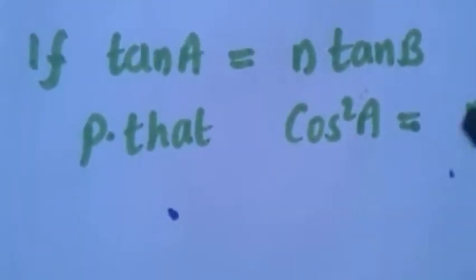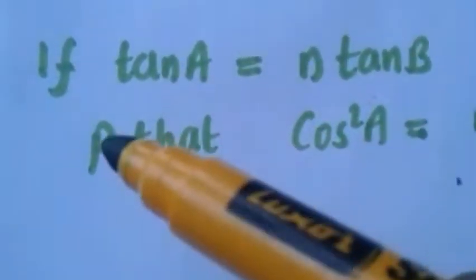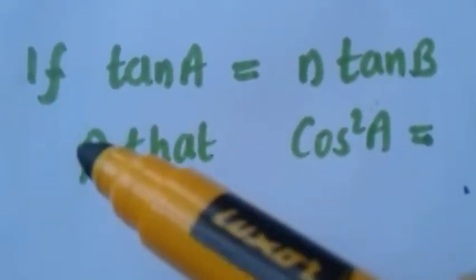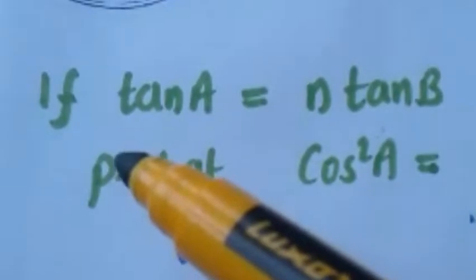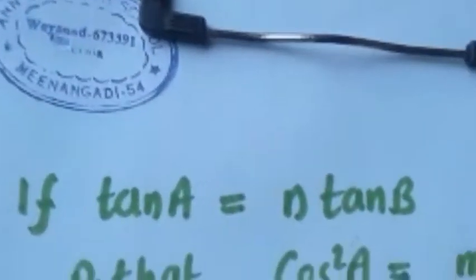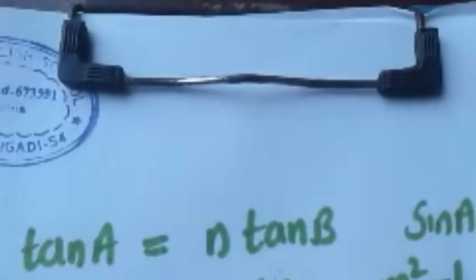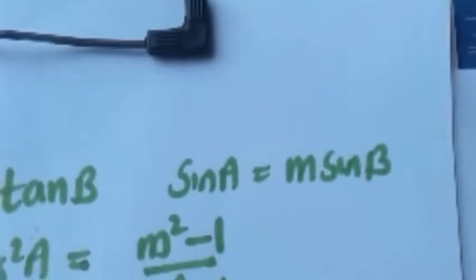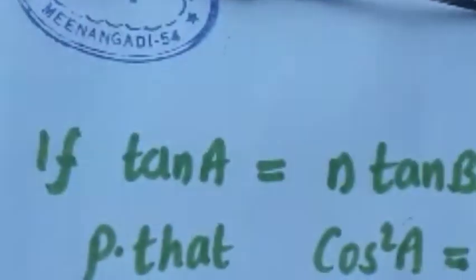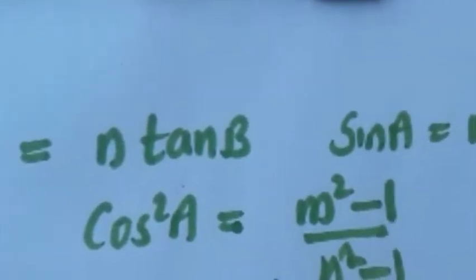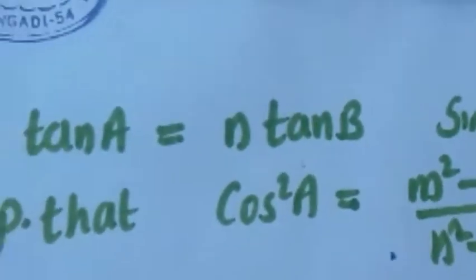Hi, welcome back to my channel. Today I came with a very important question for your board exam. Read this question: if tan A is equal to n·tan B and sin A is equal to m·sin B, then prove that cos²A is equal to (m²-1)/(n²-1).